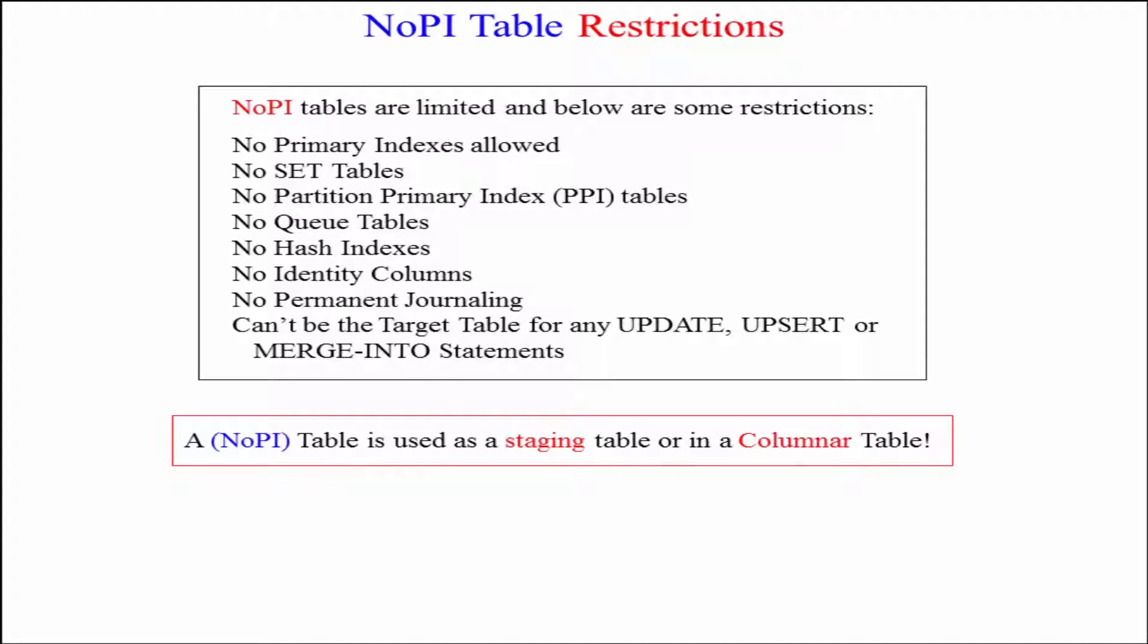There are some restrictions. No PI tables are limited to some restrictions because they can have obviously no primary indexes. They cannot be set tables. You can't have PPI tables, partitioned primary index tables. No Q tables. You can't have any hash indexes. Forget about identity columns. No permanent journaling. And they can't be the target table for any update, upsert or merge into statements.